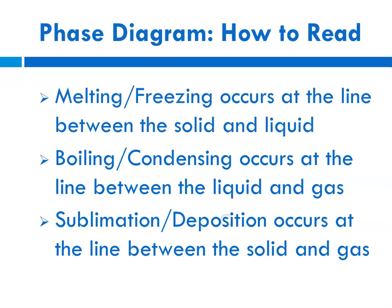And then how we read a phase diagram: along that line between solid and liquid would be where melting and freezing takes place. Where boiling and condensation would take place would be the line that is between the liquid and gas phase. And the line between solid and gas are where sublimation and deposition could take place.